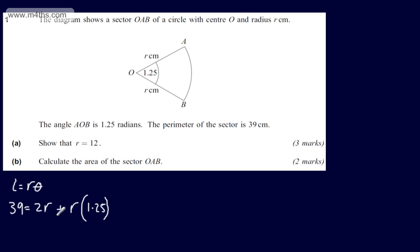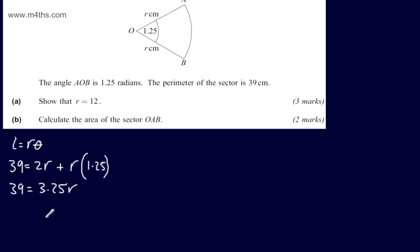So we've got 2R plus 1.25R, and that gives us that 39 will be equal to 3.25R. I'm going to divide both sides by 3.25. 39 divided by 3.25 gives us R, and that gives us that R is equal to 12 as required.